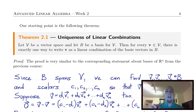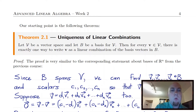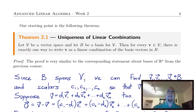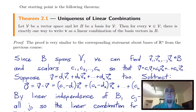So really the content of this theorem is that there's exactly one way to write v as a linear combination of the members from b. And that's where the other piece of bases is going to come in — that's where linear independence is going to come in.